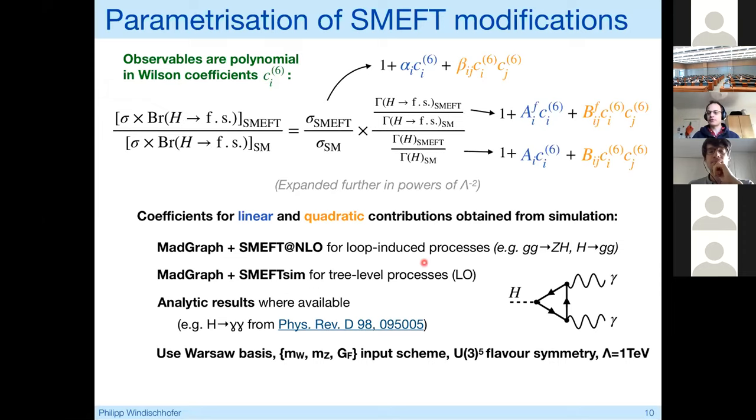That's not only true for cross sections but also for decay rates. This allows us to parameterize the cross section times branching ratio as a rational function of those polynomials. This parameterization is fully specified as soon as I write down what these numerical constants are, the alphas, the A's and the B's. We extract those coefficients from explicit calculations of the processes we're interested in. For example, for loop-induced processes such as Higgs to gamma gamma or Higgs decaying into gluons, we use MadGraph plus MG5aMC and a_loop. For processes which already exist at tree level, we resort to MadGraph plus MG5aMC. We use the alpha_EW scheme with W and Z mass as well as the Fermi constant, apply the U(3)^5 flavor symmetry, and set the suppression scale Lambda to be equal to 1 TeV by convention.